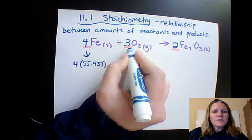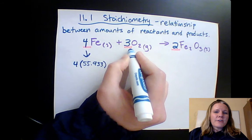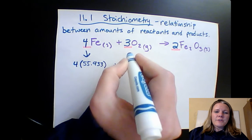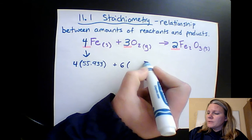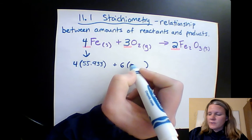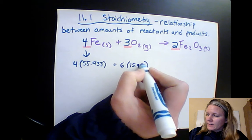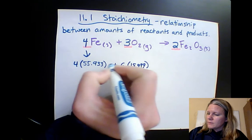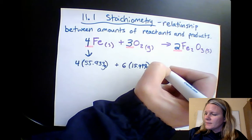Now, oxygen is a little bit trickier. There are two oxygens for every oxygen molecule, and there are three molecules all together. So that's a total of six oxygen atoms. And we know oxygen is 15.999 grams. Should be putting my units here. Oh, excellent.